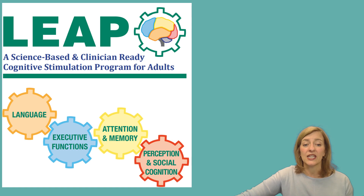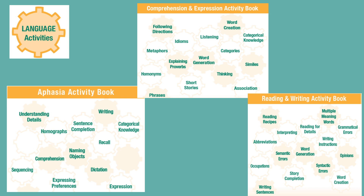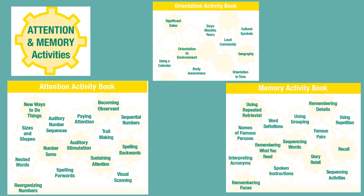The language domain is divided into three sections or books: comprehension and expression, reading and writing, and a separate book appropriate for those with aphasia. The attention and memory domain is also divided into three books that include a variety of activities addressing orientation, attention, and memory. One way to use these activities across all four domains is to bundle or stack the strategies that each client has selected with the cognitive stimulation activities being worked on, so clients are not only improving their use of strategies but also have an opportunity to use those strategies within the session. Feedback from other participants as well as the clinician is helpful for this process.